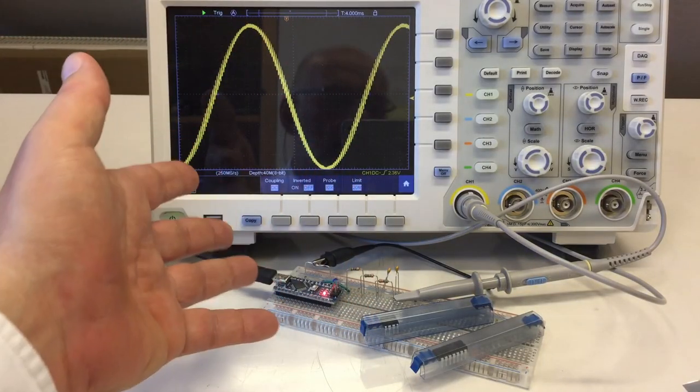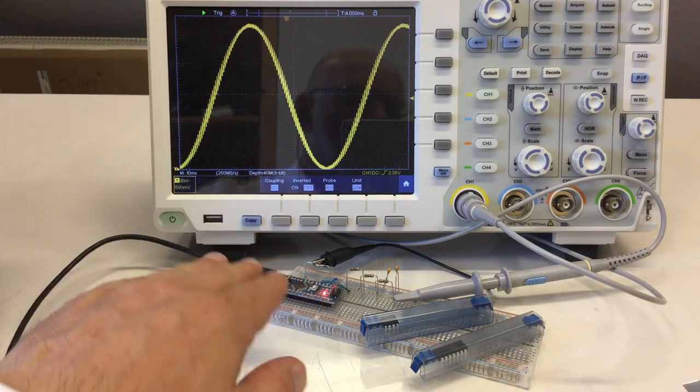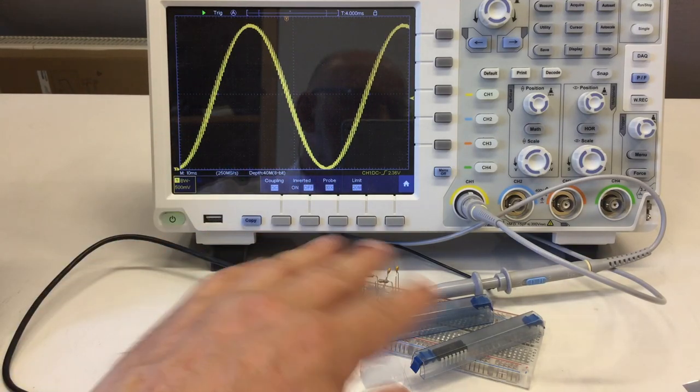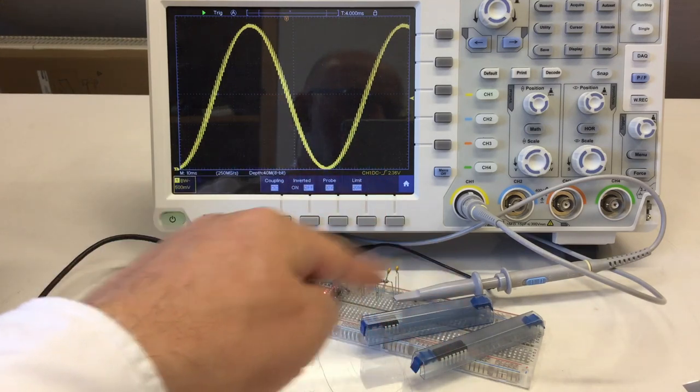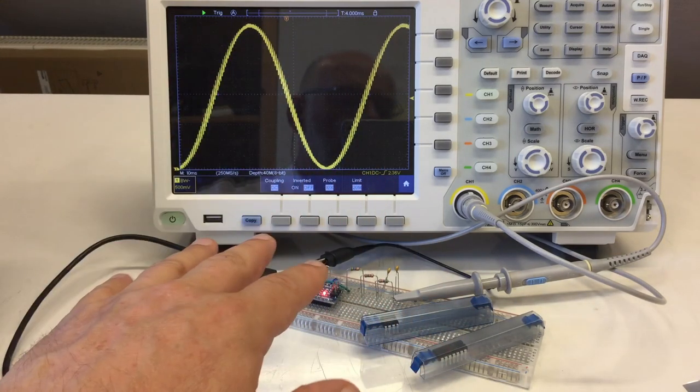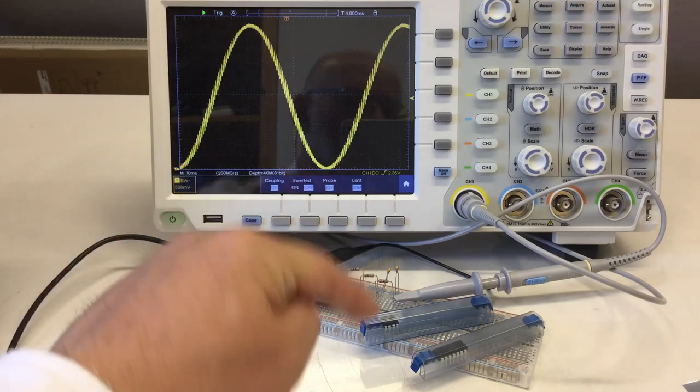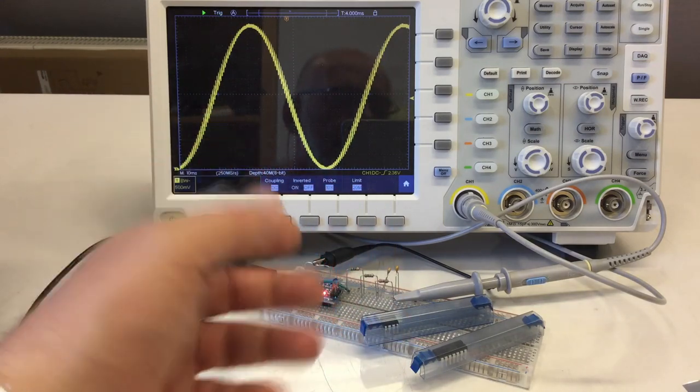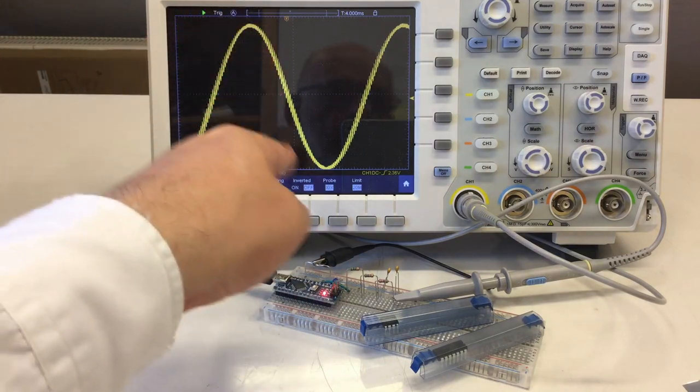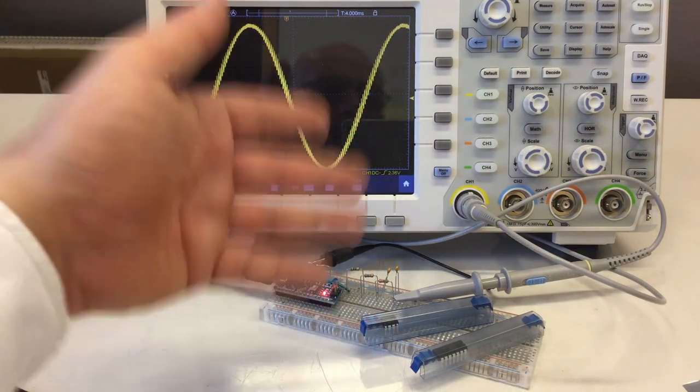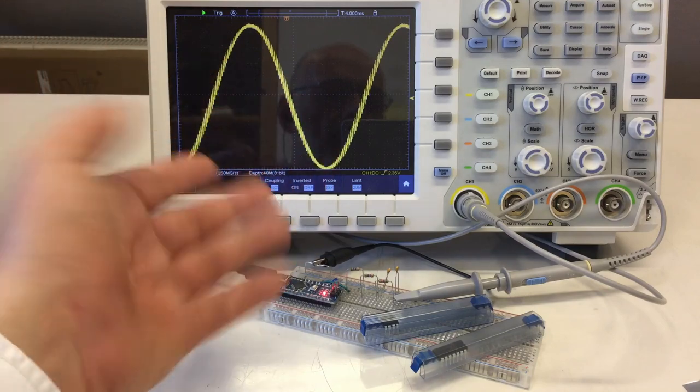In this video, I want to cover the basics. That is, how do you connect these digital to analog converters to the Arduino? What additional hardware do you need around them? And what libraries you can use to control them? And finally, if everything works out, generate some sine waves again that hopefully look a little bit better than this.